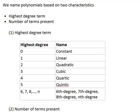We name polynomials based on two characteristics. The first is our highest degree term in the polynomial. The second is the number of terms present.